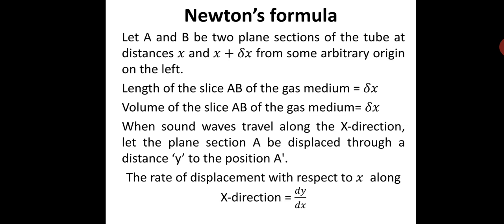Let A and B be two plane sections of the tube at distances x and x plus delta-x from some arbitrary origin on the left. The length of the slice AB of the gas medium is equal to delta-x. Since the area of cross section is unity, the volume of the slice equals length times area, and since area is unity, the volume is simply delta-x. This is the original volume of the section AB.